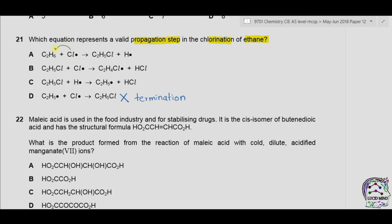For option A, C2H6 reacts with a chlorine radical, and the chlorine radical removes a hydrogen to form HCl. The product should be C2H5• radical along with HCl, so A is incorrect. In option B, a chlorine radical takes one hydrogen atom to form HCl and the rest of the molecule becomes a radical — so B is correct. Option C involves a hydrogen radical attacking C2H5Cl, which is not possible in chlorination where a chlorine radical is present. The correct answer is B.